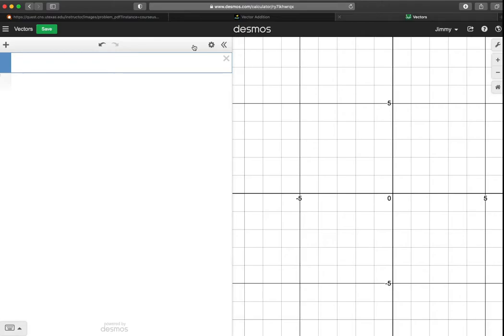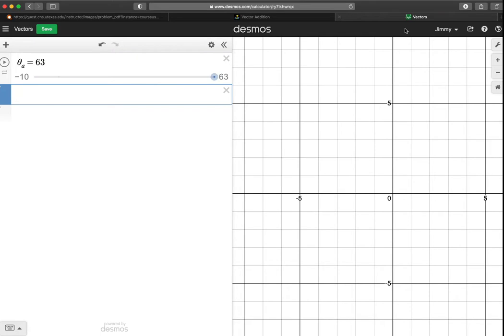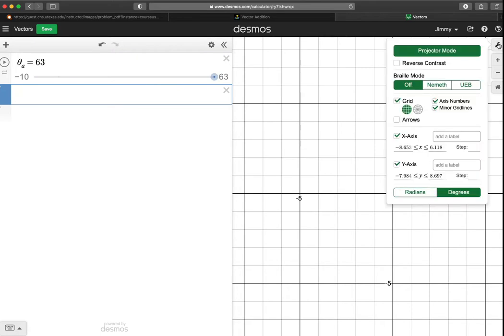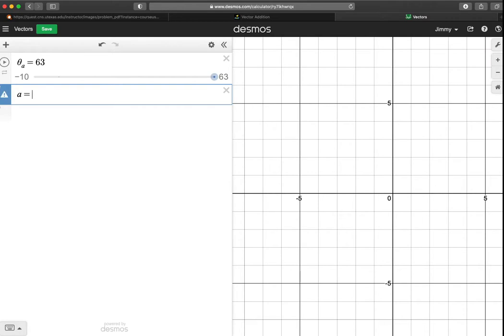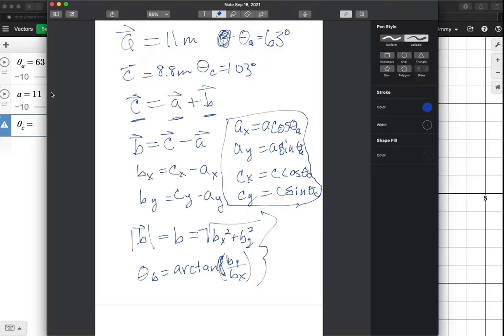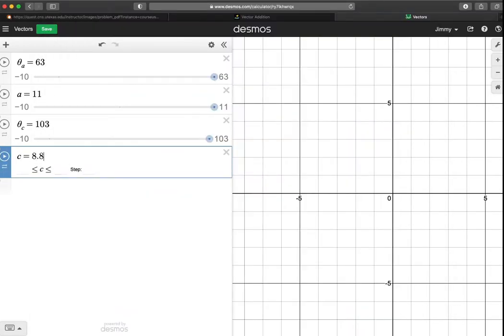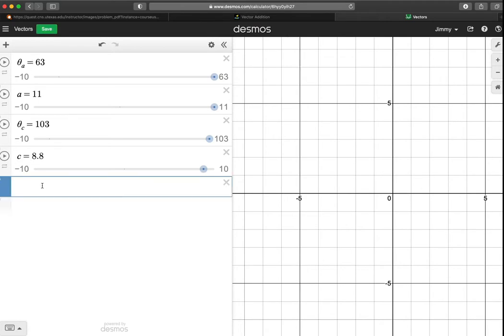So let's switch over to Desmos and do that very thing. So the first thing we need is the angle for A, which is 63 degrees. And we need to make sure Desmos is in degrees. It is. OK, so that's good. And then we're going to do the length of A was 11. And then theta C, this was our resultant, was 103 degrees. Again, being careful about making sure you're in degrees and noting what quadrant you're in. And the length of C is 8.8. So now what we're doing here is setting this up in such a way that all you would need to do is change your values, change these variables to your values.